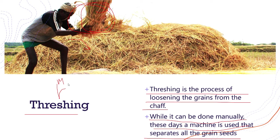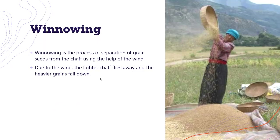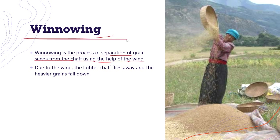Winnowing is the process of separation of the grain seeds from the chaff using the help of wind. By using wind, we can separate the chaff from the grains. Due to the wind, the lighter chaff flies away and the heavier grains fall down. The chaff is very thin and lightweight, so when wind is applied the chaff blows away and the grains are separated out.